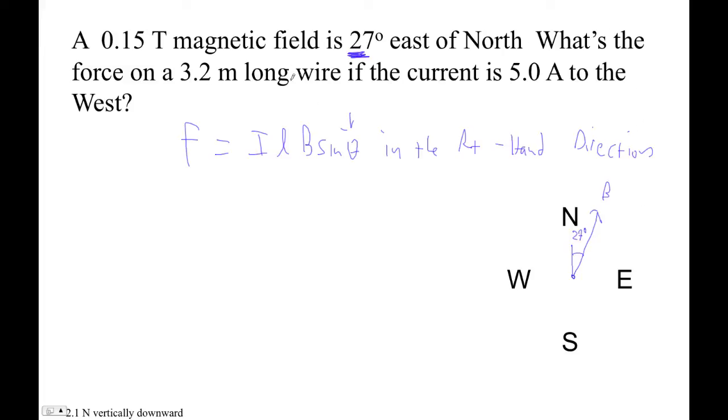What's the force on a 3.2 meter long wire if the current is to the west? So there's our current. Now, I hope at this point you're seeing that the angle between the current and the magnetic field is not 27. It's actually 90 plus 27. Do we see that?